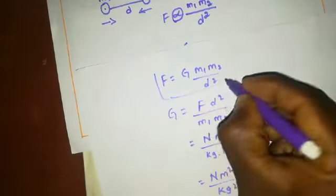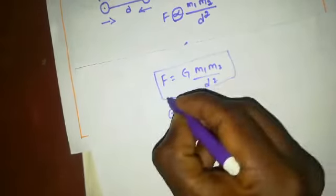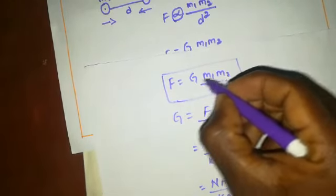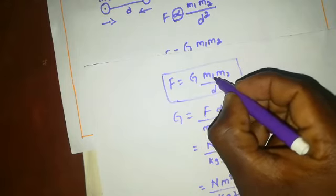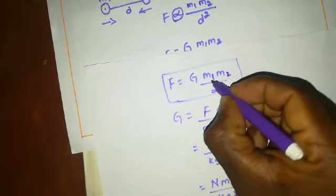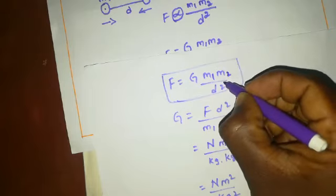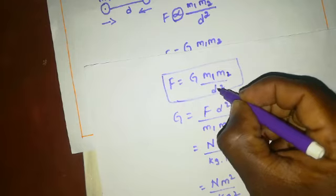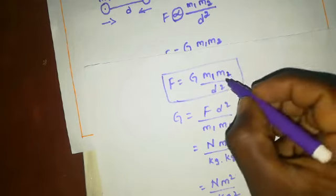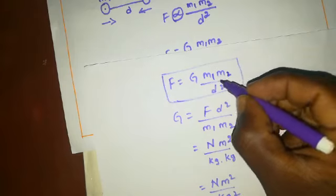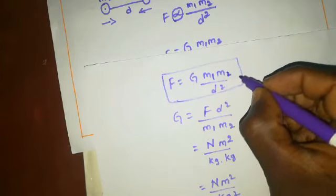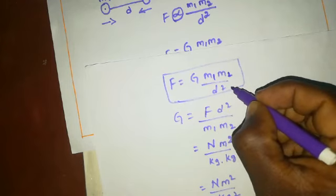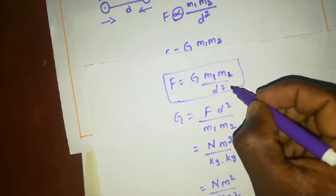This is the universal law of gravitation. The force is directly proportional to the product of their masses and inversely proportional to the square of the distance between them. This is called the universal law of gravitation.